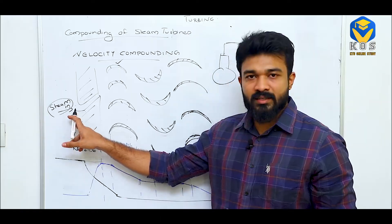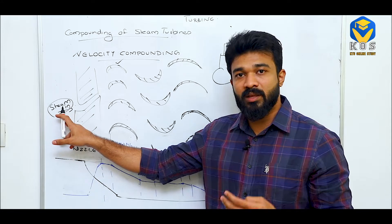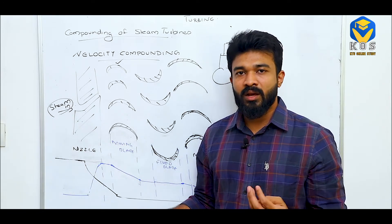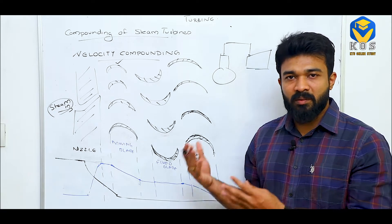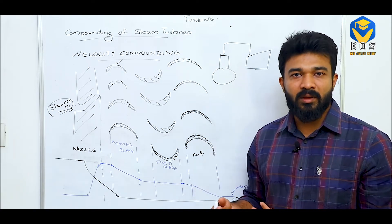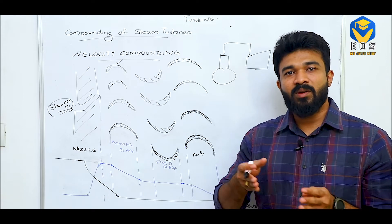This steam inlet is coming from the boiler at very high pressure and high temperature. This high pressure is not useful for us. So if we turn into the turbine and rotate the rotor, we convert this high pressure into velocity.